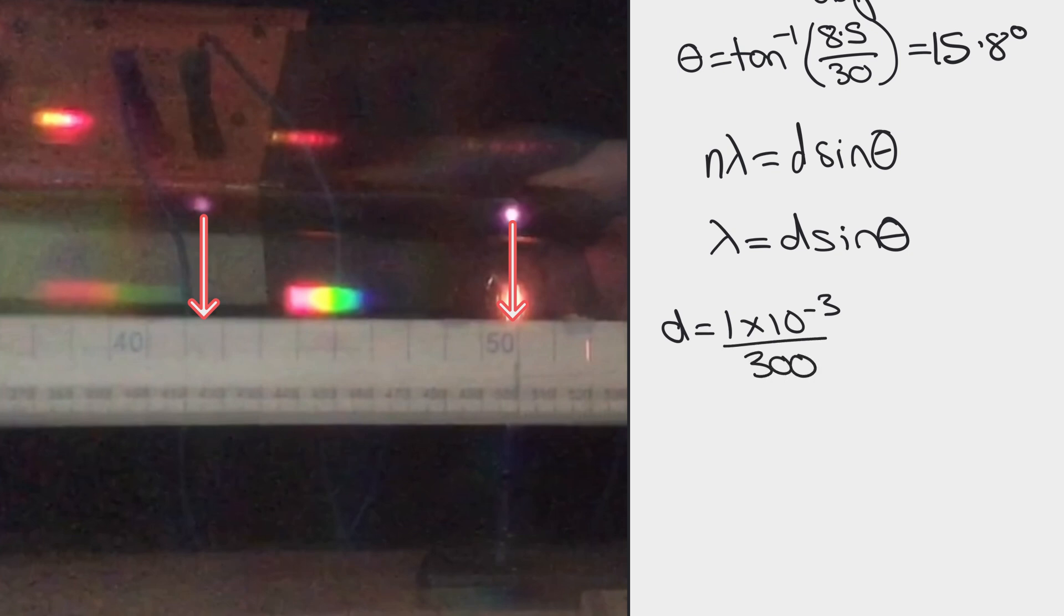So I can now work out that the wavelength lambda is equal to 1 times 10 to the minus 3 over 300 times by sine of my angle 15.8 and if I do that on the calculator I get 9.09 times 10 to the minus 7 meters.